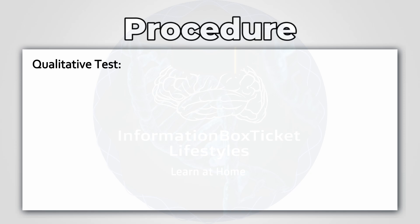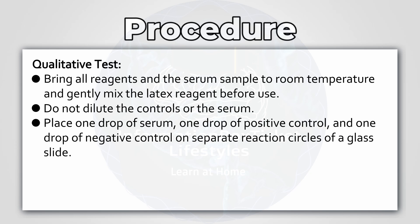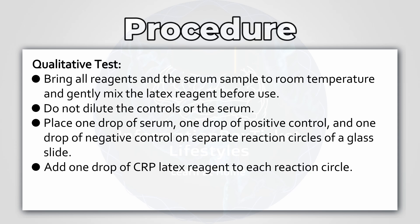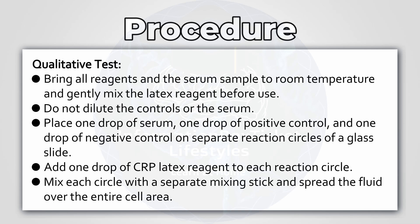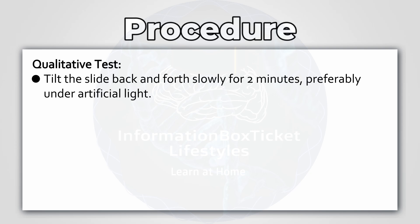Procedure of C-Reactive Protein Test — Qualitative Test. Bring all reagents and the serum sample to room temperature and gently mix the latex reagent before use. Do not dilute the controls or the serum. Place one drop of serum, one drop of positive control, and one drop of negative control on separate reaction circles of a glass slide. Add one drop of C-reactive protein latex reagent to each reaction circle. Mix each circle with a separate mixing stick and spread the fluid over the entire cell area. Tilt the slide back and forth slowly for two minutes, preferably under artificial light, and observe for visible agglutination.